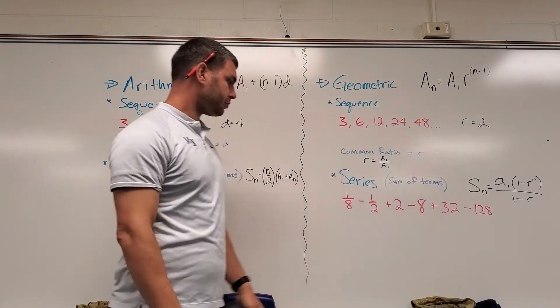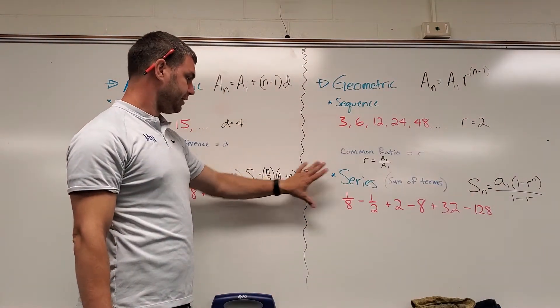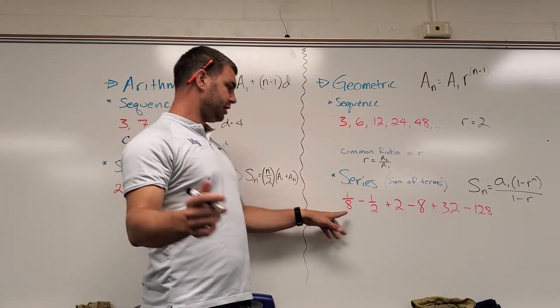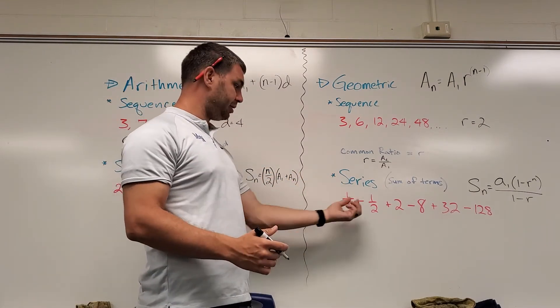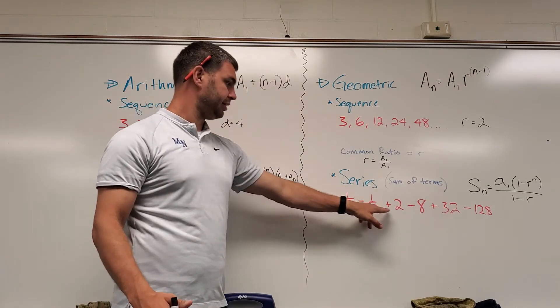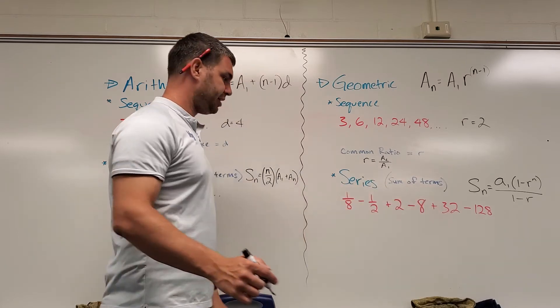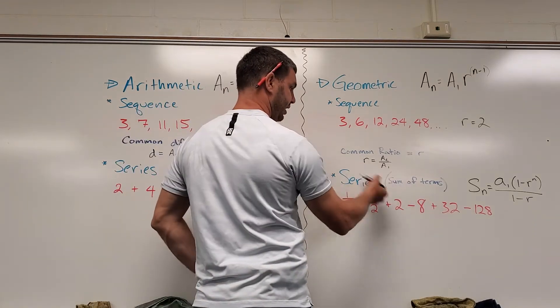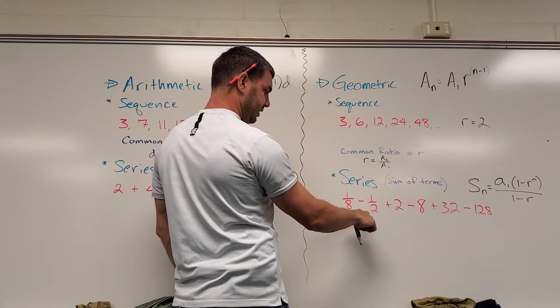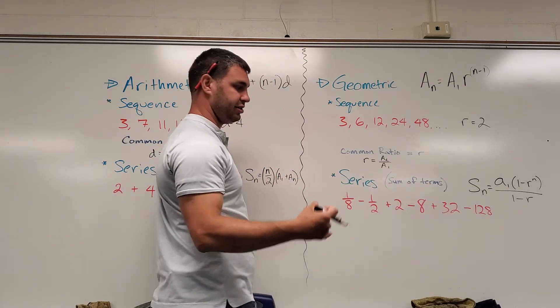Likewise, the geometric series—again we add those up. Now you'll notice something with geometric series: it could just be plus, plus, plus, but it could also be alternating, like in this one it's minus, plus, minus, plus. And that's because if you look at how we find our common ratio—the second term divided by our first term—you can use this for any two consecutive terms.